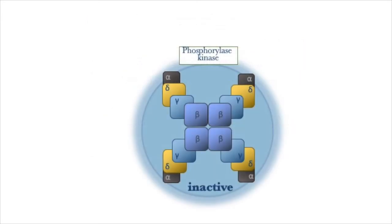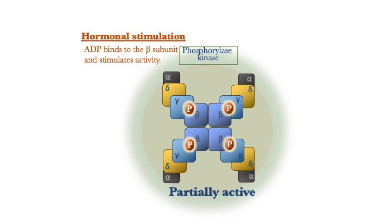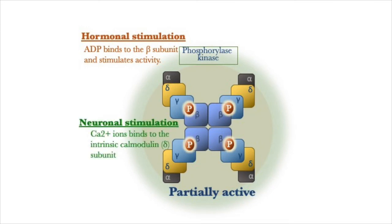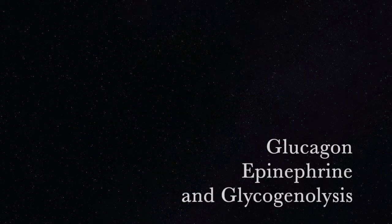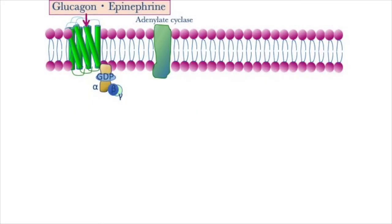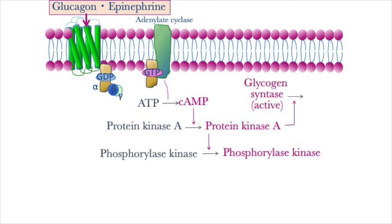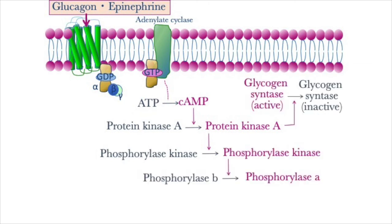Phosphorylase kinase receives signals from hormonal messengers and neuronal stimuli. Glycogenolysis in the liver is controlled partly by hormones. Glucagon and epinephrine bind to a receptor on the liver cell surface, and a second messenger is produced within the cell, which activates protein kinase A, glycogen phosphorylase kinase, and glycogen phosphorylase.